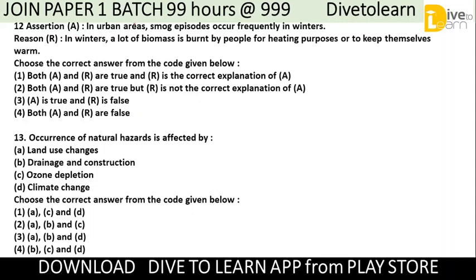Assertion: In urban areas, smog episodes occur frequently in winter. Reason: In winters, a lot of biomass is burnt by people for heating purposes or to keep themselves warm. The correct answer is number 2 — both A and R are true, but R is not the correct explanation of A.